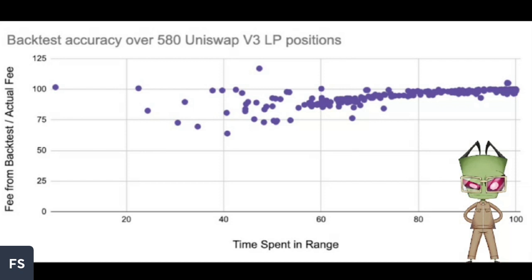I want to back up and explain for the viewers — and I'm not 100% certain on this — but since I heard about PancakeSwap V3 and the algorithm you've developed for V3 Animal Farm, the way I've thought of it is: if you're providing liquidity on V2, you're sharing all the trading fees with everybody else in the pool. But if you're providing liquidity on V3, you're providing liquidity only within a narrow price range, so you don't have to share those trading fees with the entire pool, only the people also in that price range.